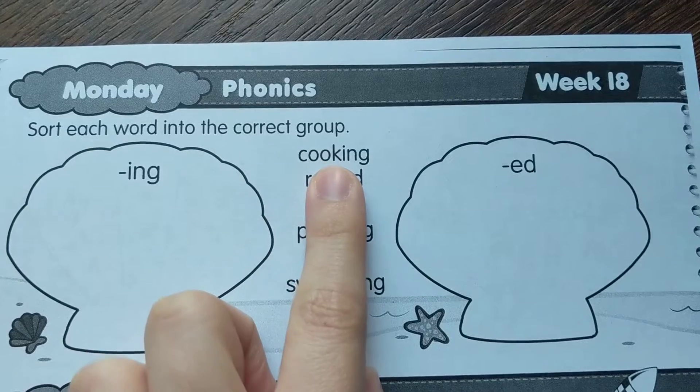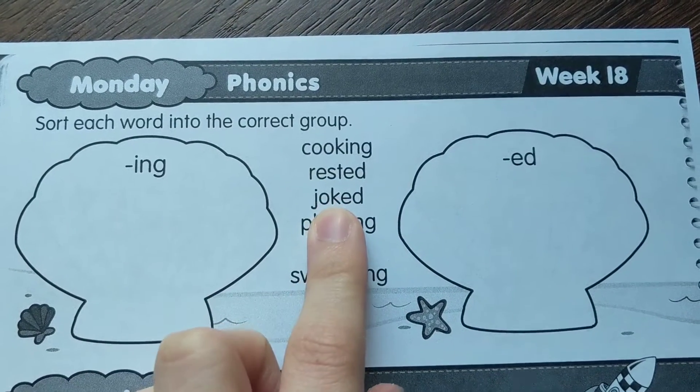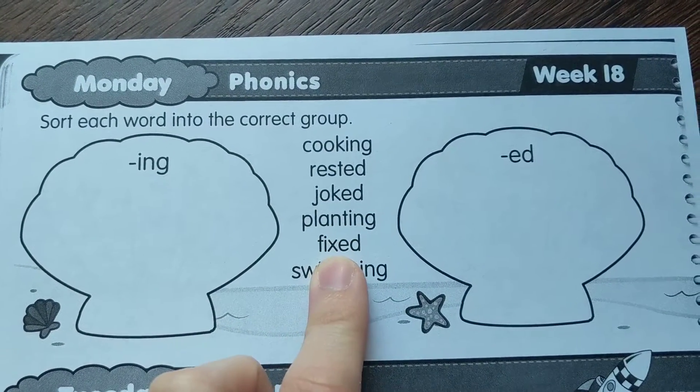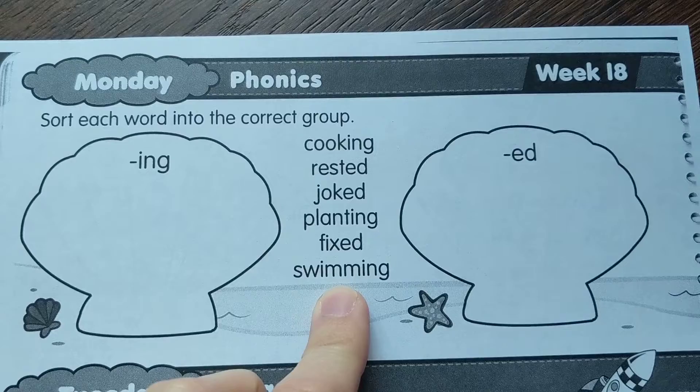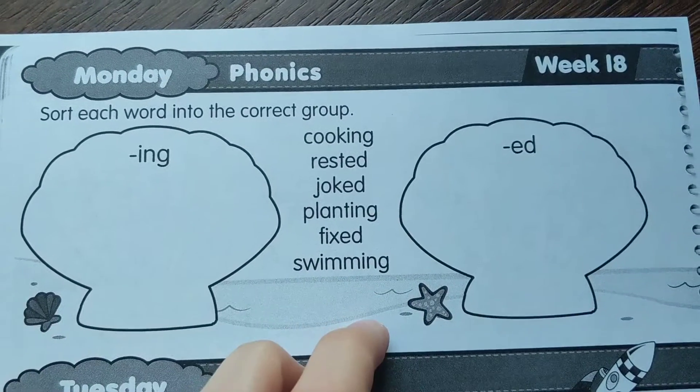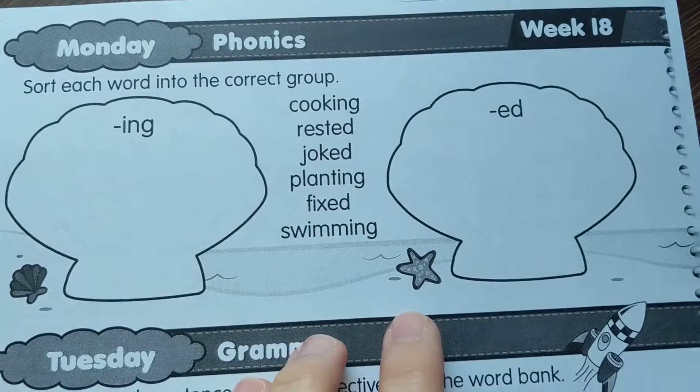I have: cooking, rested, joked, planting, fixed, and swimming. Write each word in the correct shell.